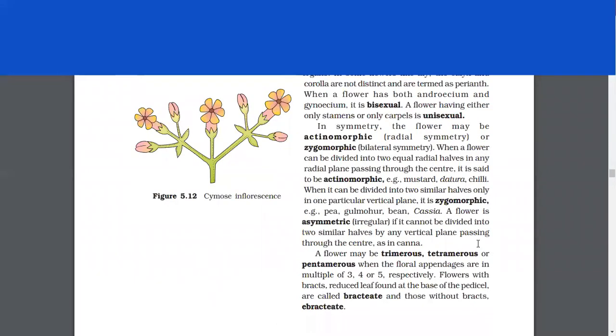In symmetry, the flower may be actinomorphic or zygomorphic. When a flower can be divided into two equal radial halves in any radial plane passing through the center, it is called to be actinomorphic, for example, mustard, datura, chili. When it can be divided into two similar halves only in one particular vertical plane, it is zygomorphic, for example, pea, gulmohar, bean, cassia. A flower is asymmetric if it cannot be divided into two similar halves by any vertical plane passing through the center, as in canna.